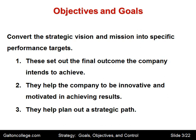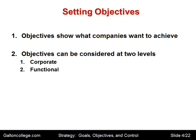The objectives show what the company wants to achieve. The objectives can be considered at two levels: corporate and functional. Corporate being the overall objectives of the business, and functional being the much more applied internal functioning of the business. We could have objectives relating to the marketing section, or the production side, or one of the functional areas. The objectives show what the company wants to achieve, and this can be done at two levels.